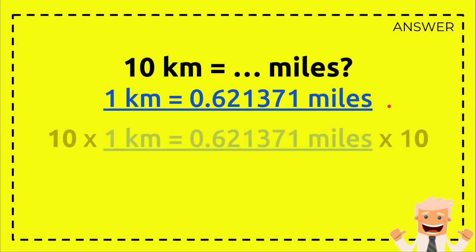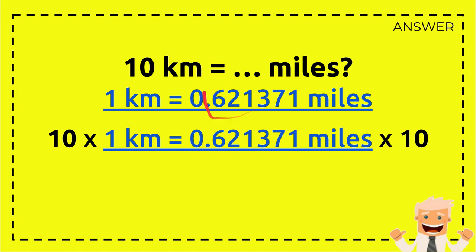Okay, and this is how you answer the question. First, you need to write down the formula again here. And then you need to multiply anything in the left side of the equal sign with 10 and anything in the right side of the equal sign with 10 as well.